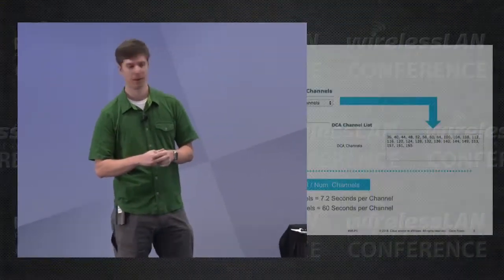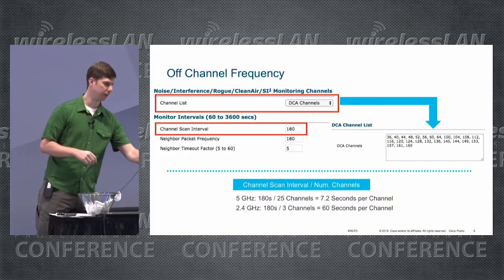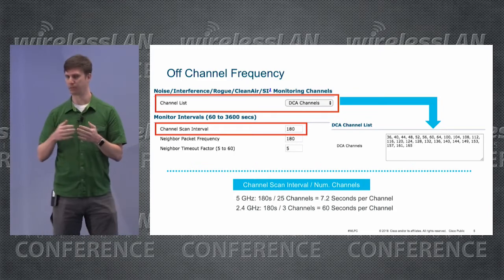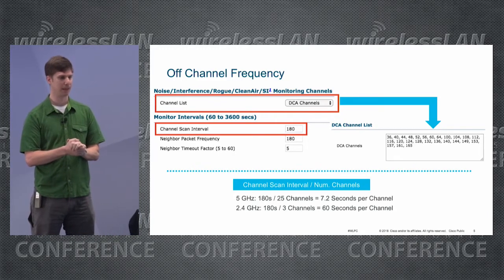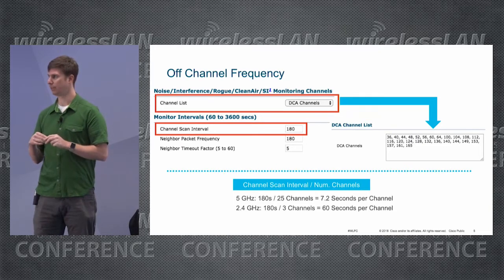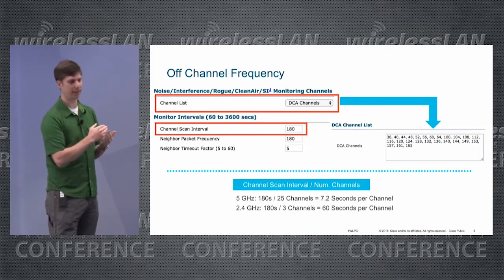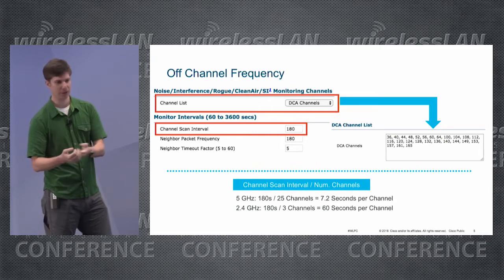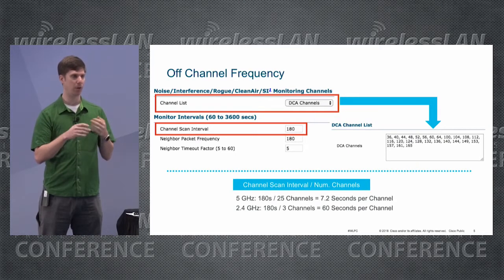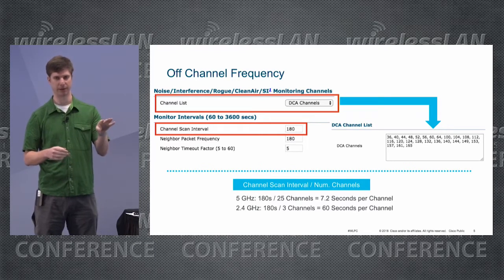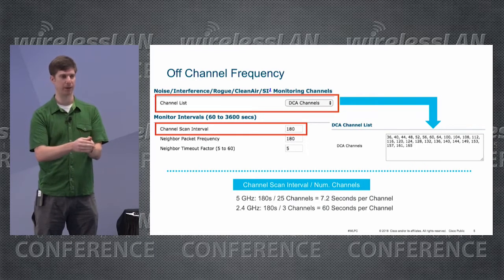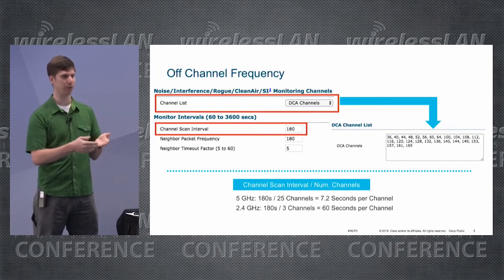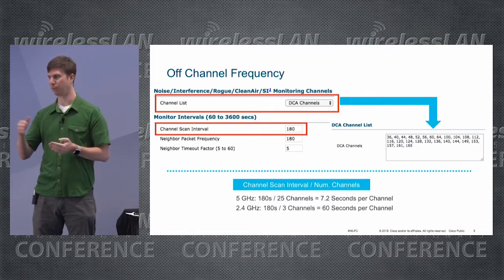How do you configure how often your access point is going off-channel? In Cisco world, you configure which channels get monitored — by default it's the channels configured for RRM or DCA — and the channel scan interval is set to 180 seconds, meaning the AP cycles through all channels in its list every 180 seconds. To calculate how often your AP goes off-channel, take the channel scan interval (180 seconds) and divide by the number of channels. In 5 GHz in the US we have 25 channels, so the AP goes off-channel every 7.2 seconds.